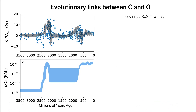Carbon and oxygen are two elements which are critical to supporting life, and these two elements are intimately linked by the process of photosynthesis. This relationship is also evident in the geologic record.